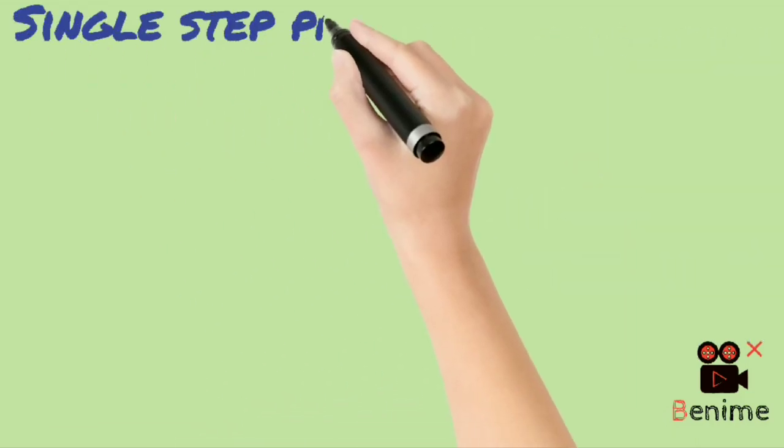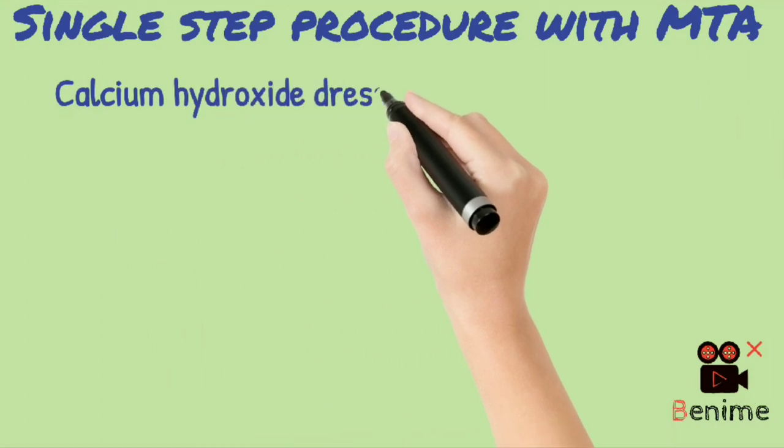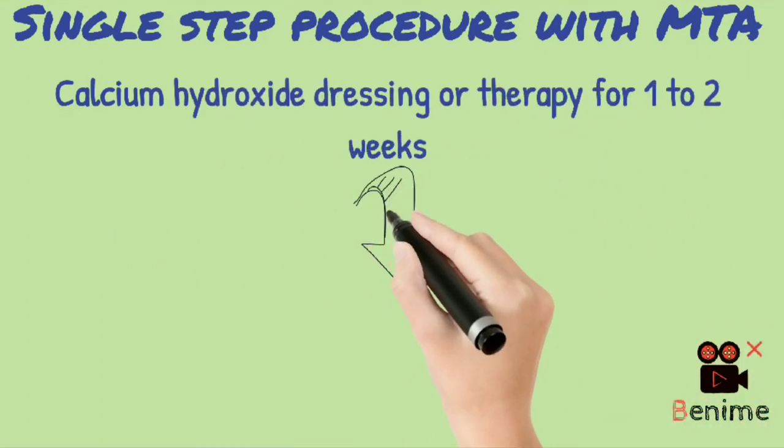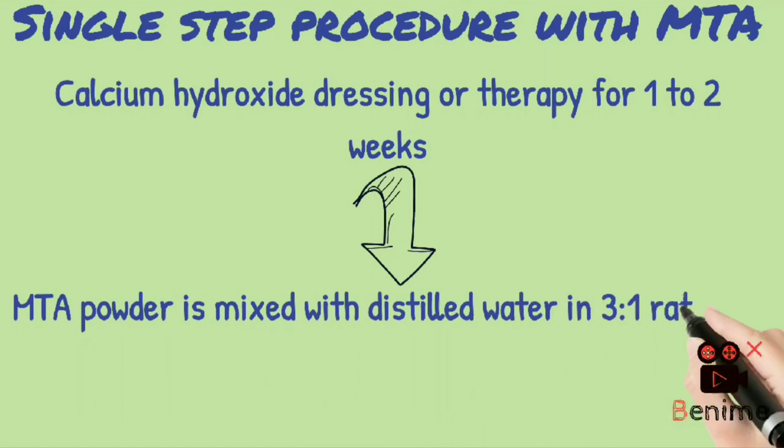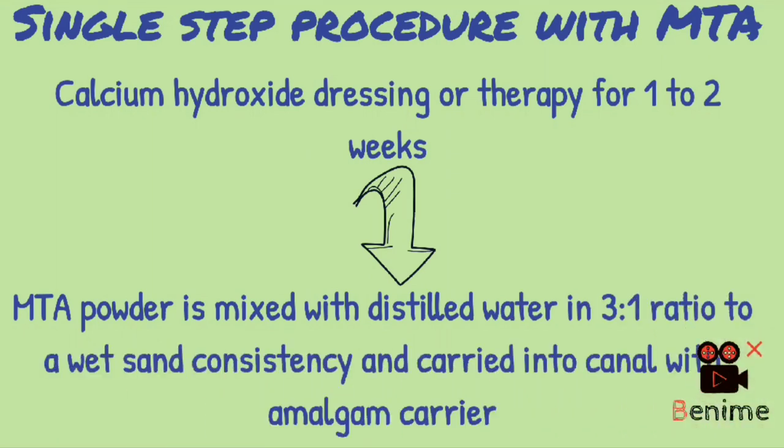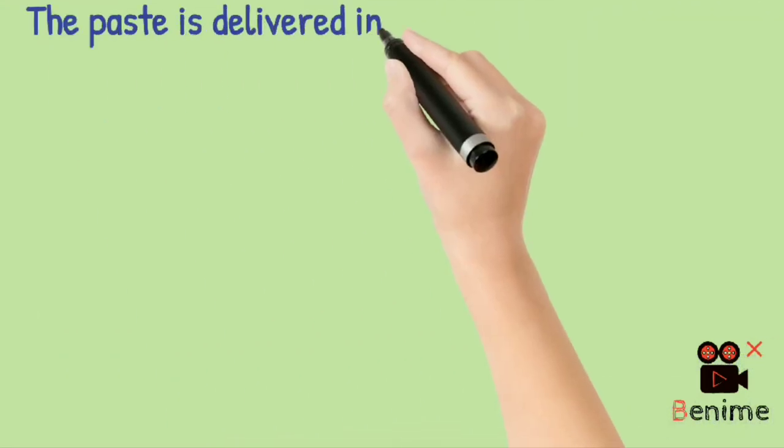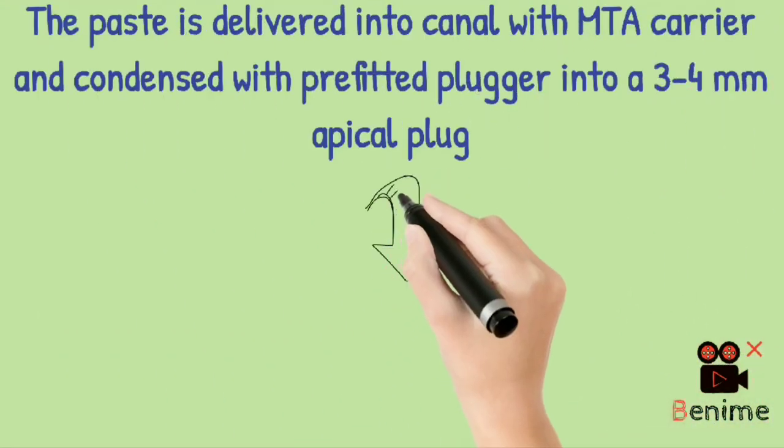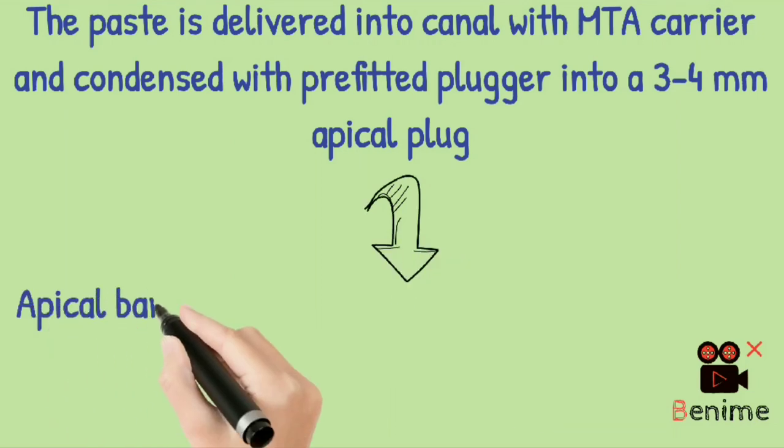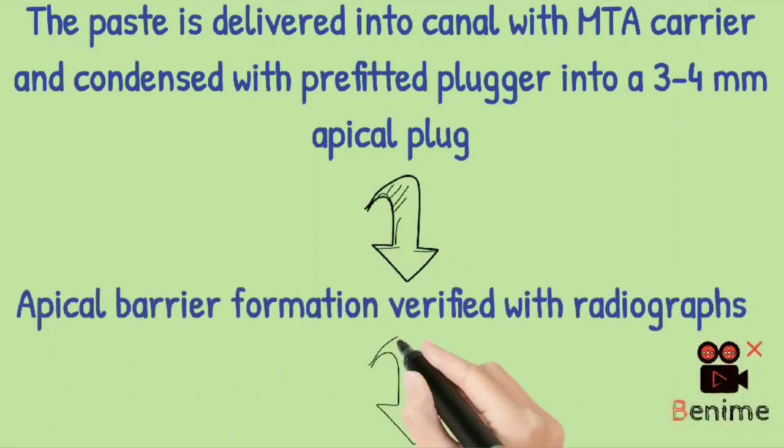Either proceed by using MTA, which is a single step procedure, or calcium hydroxide, which is a multiple step procedure. Let's dive into MTA procedure first. After cleaning and shaping the canal, place calcium hydroxide dressing for 1 to 2 weeks. Then mix MTA with distilled water in a wet sand consistency to a ratio of 3 to 1, and place it in the canal with the help of amalgam carrier. Or you may also carry it with the MTA carrier and deliver the paste.